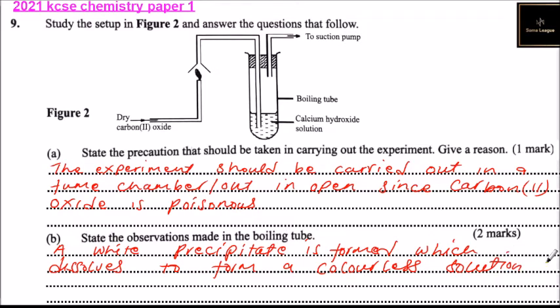This is because the precipitate will be calcium carbonate and in excess water it will form calcium bicarbonate which dissolves in the water.